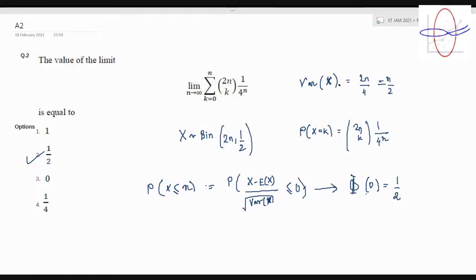Hello guys, so this is problem number two now. It's asked what is the limit value of the summation of k from 0 to n, 2n choose k, 1 by 4 to the power n.